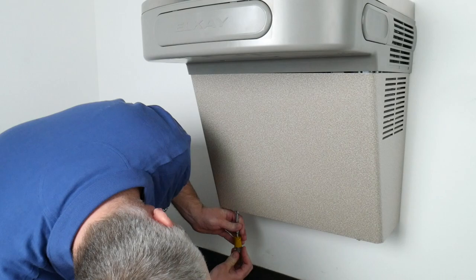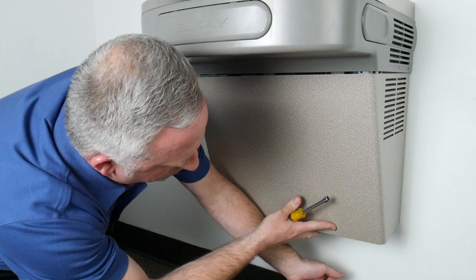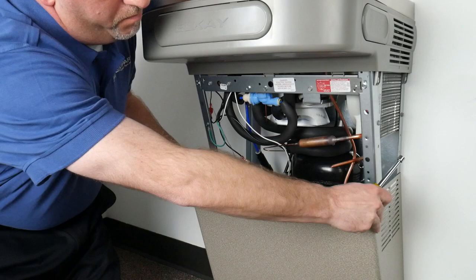The first step is to remove the wrapper from the drinking fountain using your 5/16 nut driver to remove the four hex head screws on the bottom of the wrapper.